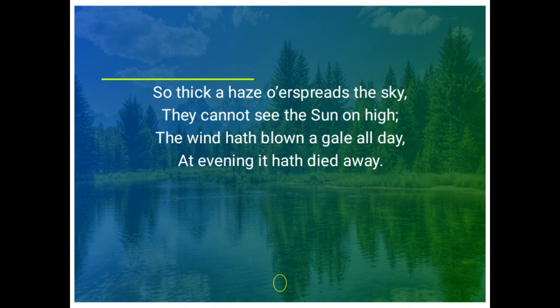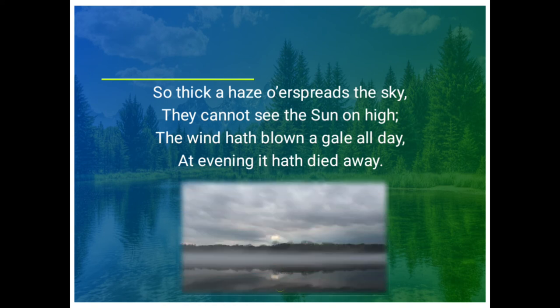In the twelfth stanza, the poet describes the gloomy atmosphere. 'So thick a haze overspreads the sky they cannot see the sun on high. The wind hath blown a gale all day. At evening it hath died away.' The rover is sailing to Scotland, but the sun is hidden behind thick fog. Strong winds were blowing all day, and now in the evening the wind has stopped, signifying the approach of a horrible storm.